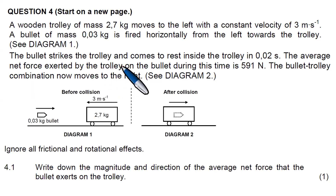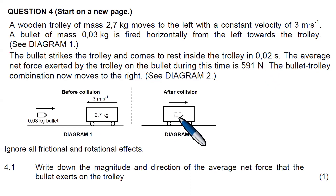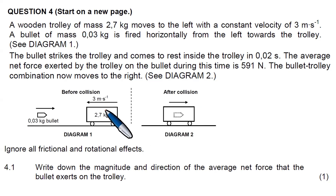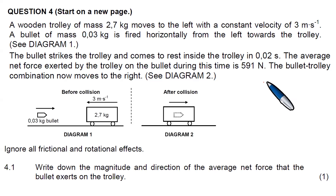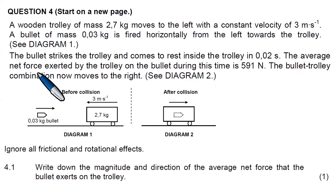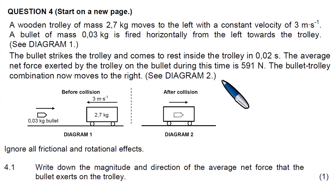The bullet strikes the trolley and comes to rest inside the trolley in 0.02 seconds. After the collision we can see the direction of motion of the trolley — it appears to be moving towards the right, yet before it was moving towards the left. The average net force exerted by the trolley on the bullet during this time is 591 Newtons.